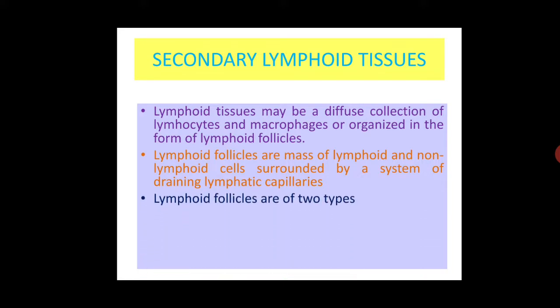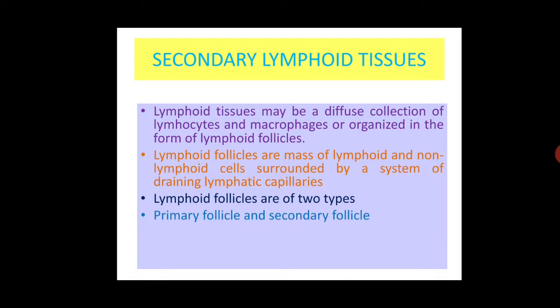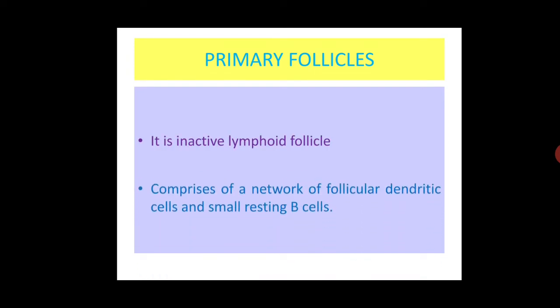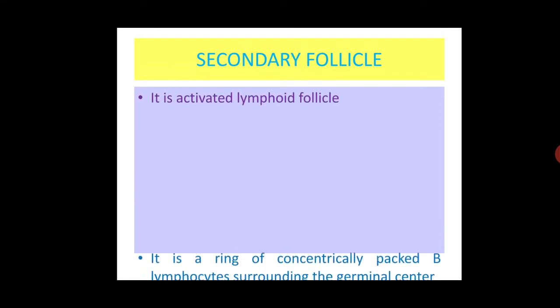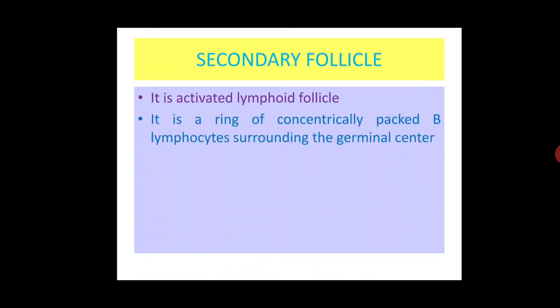There are two types of lymphoid follicles: primary and secondary. Primary lymphoid follicles are smaller in size and consist of a network of follicular dendritic cells and small resting B cells. Secondary follicles are larger in size and are activated lymphoid follicles. They have a ring of concentrically packed B lymphocytes surrounding the germinal center.